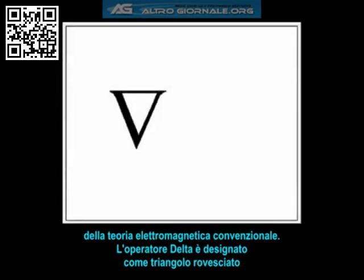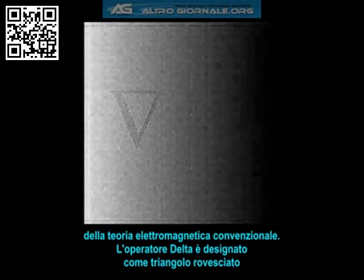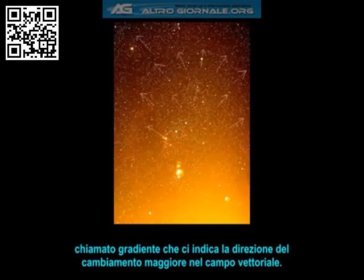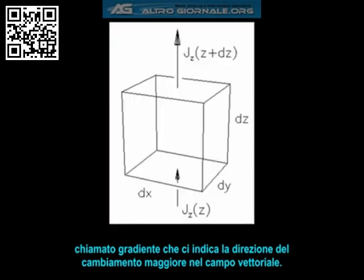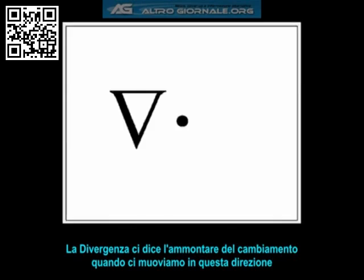The delta operator, which is designated as an upside-down triangle, is called a gradient, which basically tells us the direction of greatest change in the vector field. The divergence tells us the amount by which it changes when we move in this direction. The divergence is designated by a gradient dot product operator — the upside-down triangle with a period next to it.